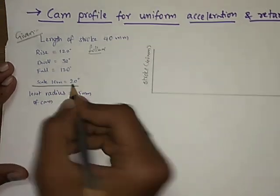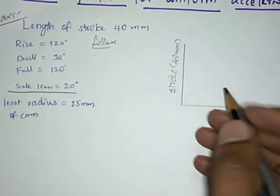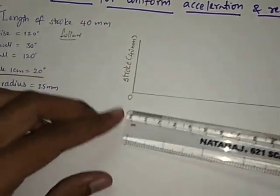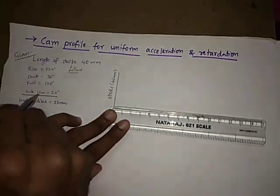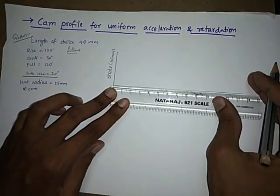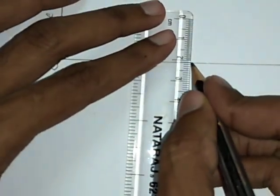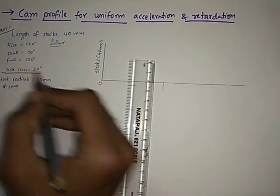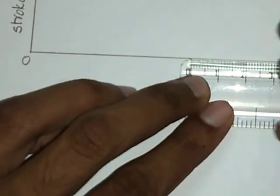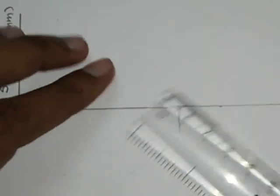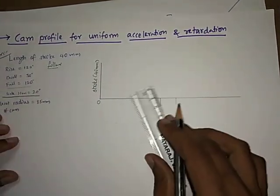For that, we have to take some scale. Suppose 1 cm is equal to 20 degrees. So rise of 120 degrees can be represented by 6 cm. Start from 0 and mark 6 cm on the x-axis — because at the scale of 1 cm equals 20 degrees, 120 degrees means 6 cm. This will indicate the rise. After that, indicate dwell, which will be 1.5 cm according to this scale. Then indicate the fall, which will also be 6 cm.